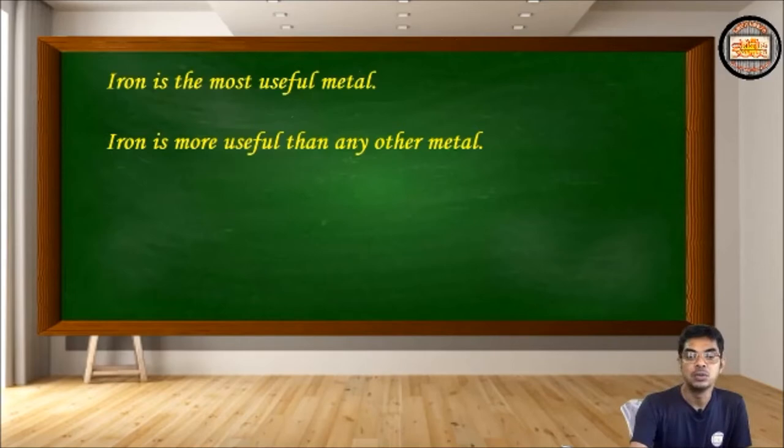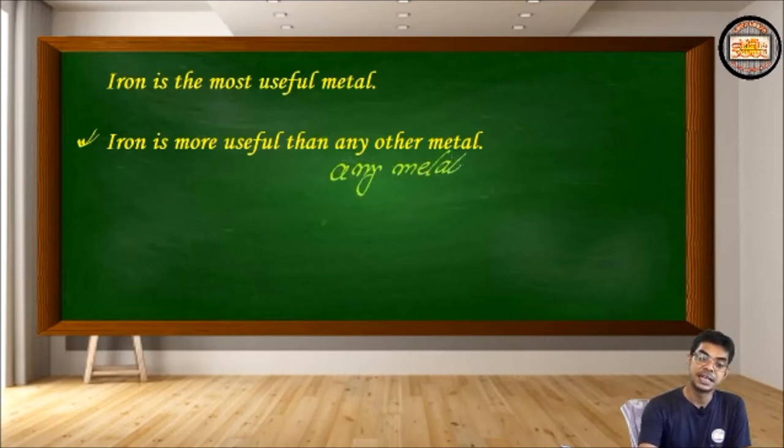Just have a look at the sentence. Obviously, I'm talking of the comparative. What happens if I use any metal in its place? Just read the sentence again with any metal. Iron is more useful than any metal. So where is the difference? Is there actually any difference? Any other metal and any metal?